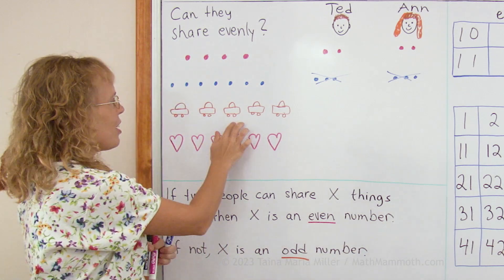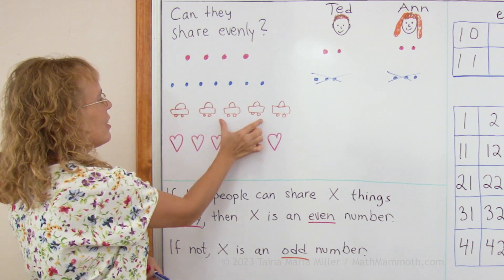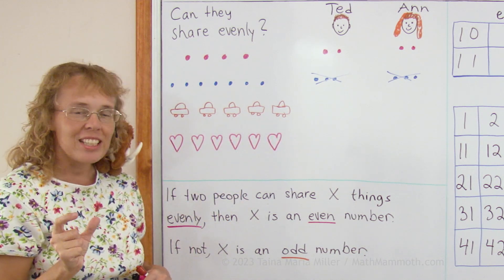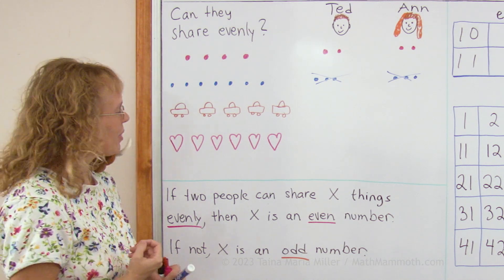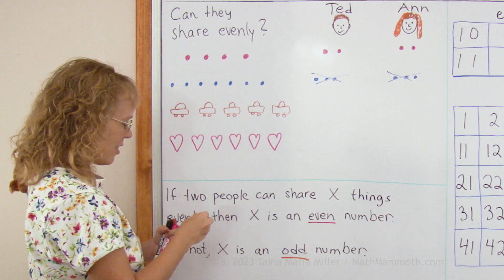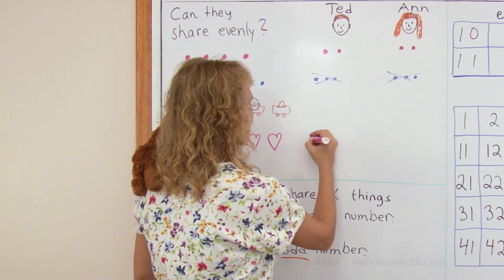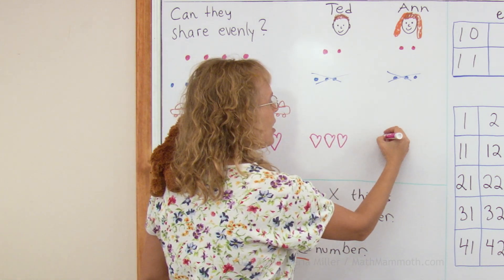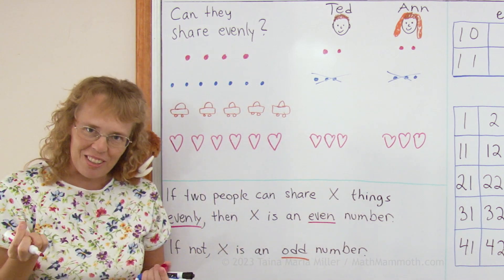How about five cars? The same thing happens, I could give two to Ted, two to Anne, and one would be left over. So five is not an even number. We say it is an odd number. Over here, six hearts. Can they share them evenly? This time it works out just fine. Three here, and three here, right? A total of six. So six is an even number.